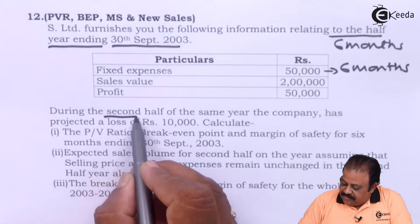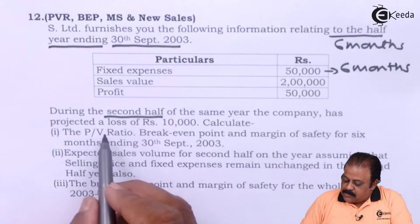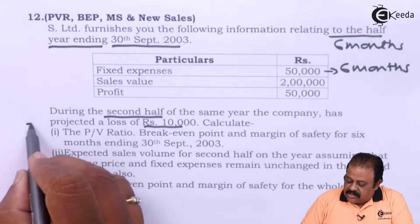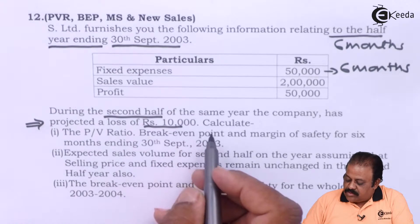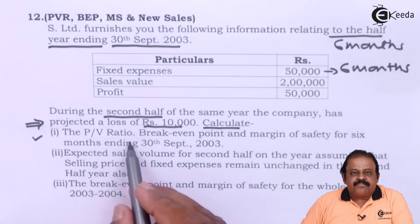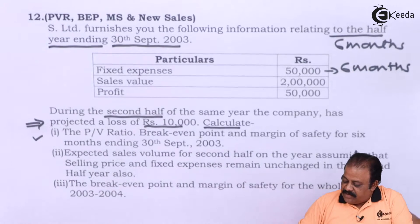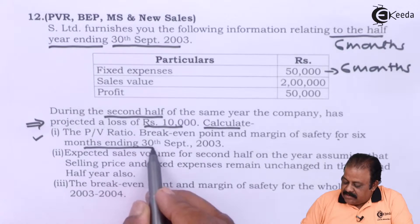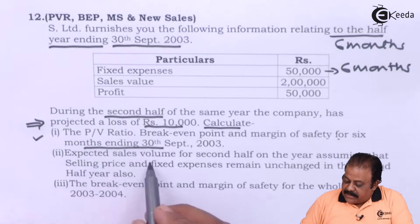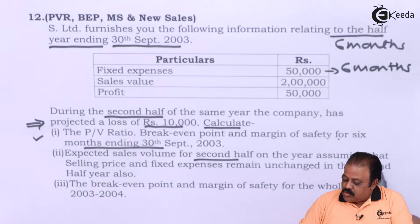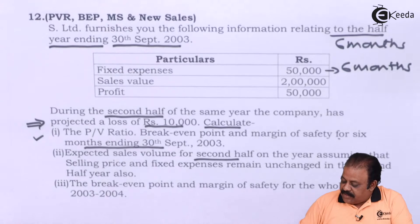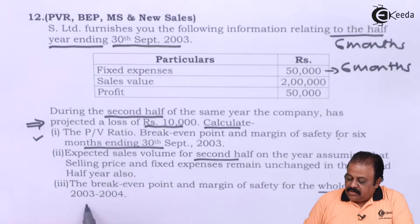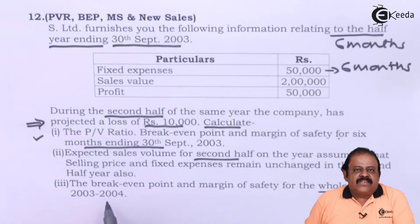During the second half of the same year, the company has projected a loss of rupees ten thousand. We are required to calculate: first, PV ratio, break-even point, and margin of safety for six months ending 30th September 2003; second, expected sales volume for the second half; and third, break-even point and margin of safety for the whole year 2003-2004.